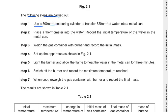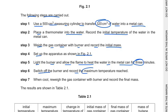Use a 500 cm³ measuring cylinder to transfer 320 cm³ of water in a metal can. Place a thermometer into the water and record the initial temperature. Weigh the gas container with burner and record the initial mass. Set up the apparatus as shown in figure 2.1. Light the burner. Allow the flame to heat the water in the metal can for 3 minutes. Now remember it's 3 minutes. Switch off the burner and record the maximum temperature reached, and when cool, re-weigh the gas container with the burner and record the final mass.